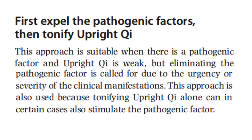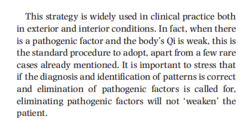The second approach — expel pathogenic factors, then tonify upright chi — is suitable when there is a pathogenic factor and upright chi is weak, but eliminating the pathogenic factor is called for due to the urgency or severity of the clinical manifestations. This approach is also used because tonifying upright chi alone can, in certain cases, also stimulate the pathogenic factor. This strategy is widely used in clinical practice, both in exterior and interior conditions. In fact, when there is a pathogenic factor and the body's chi is weak, this is the standard procedure to adopt.